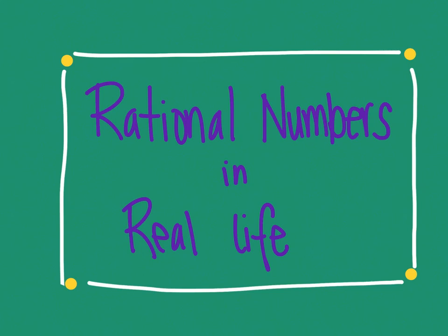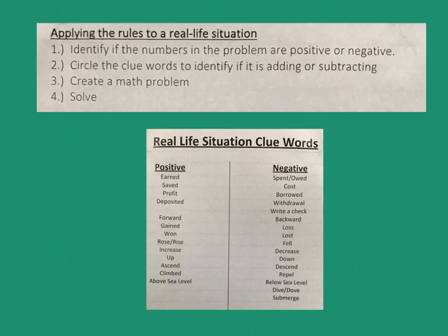This video is going to look at some real-life situations and we're going to try to identify the clue words that tell us if numbers are positive or negative, and then solve for the amount that they're looking for. When we look at real-life situations, we first identify if the numbers in the problem are going to be positive or negative. One way to do this is circle the clue words to help you identify if you're going to be adding or subtracting. Then you can make a math problem and solve it.